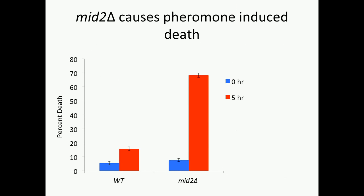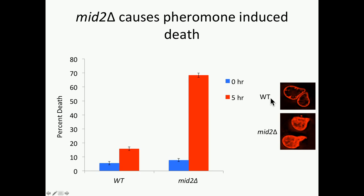MID2 stands for mating-induced death, and here you can see why. These are MATA cells exposed to pheromone out to five hours. Wild-type cells survive well; however, MID2 deletion cells show a distinct increase in cell death. We've shown that this isn't just about death — this is actually a loss of cell integrity. Using FM4-64 staining, which in wild-type cells remains within the plasma membrane, MID2 deletion cells show this distinct, really bright staining of the entire schmoo. Even in metabolically dead cells, FM4-64 remains within the plasma membrane, so this really shows that these cells have lost integrity.